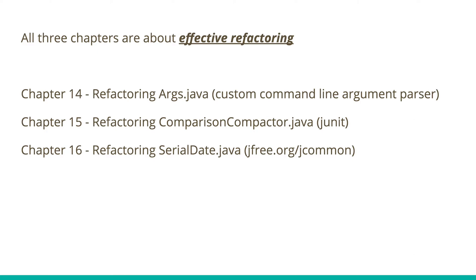Chapter 15 is when he reviews an open-source code in JUnit. The topic of the chapter is 'JUnit Internals,' but it's slightly misleading — it has nothing to do with the internals of JUnit's framework. Instead, it takes a class called ComparisonCompactor and refactors it. It's still a good example to review how the author critiques various parts of that code base — a great learning experience with a lot of code snippets.